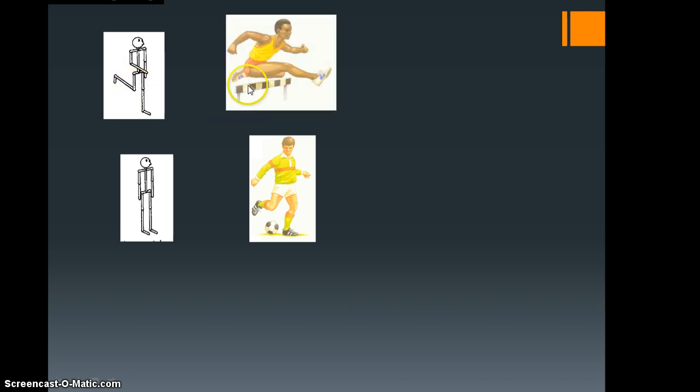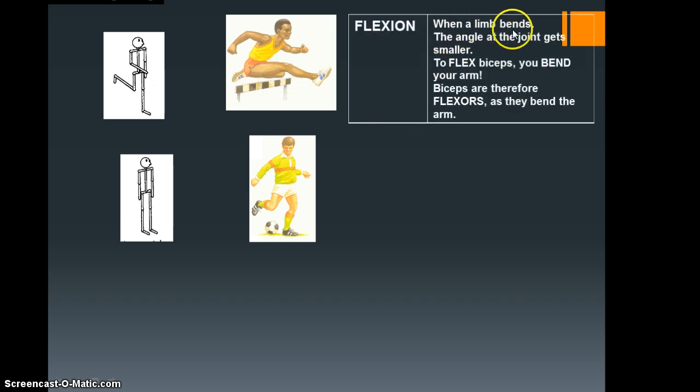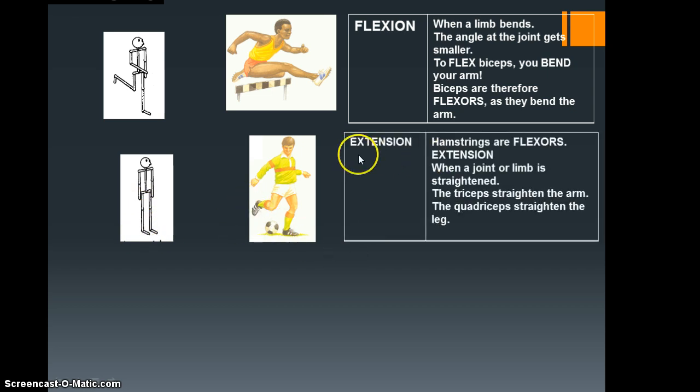Another example would be the hurdles here, the guy's back leg. So when a limb bends, the angle of the joint gets smaller, therefore we say that there is a flexion. Now if we reverse this and we say that this guy's leg moves forward into that position there or even further, from there around to there, we can say there is an extension. So when a joint or limb is straightened, that's the basic principles.